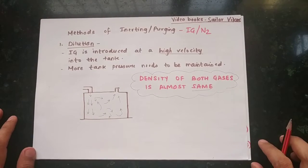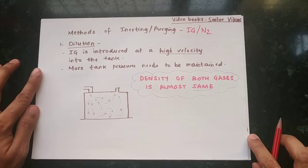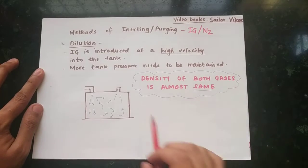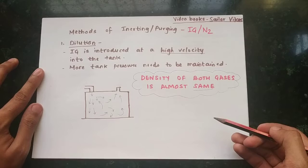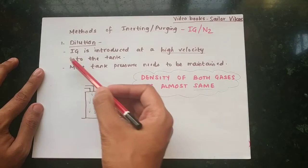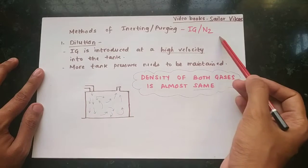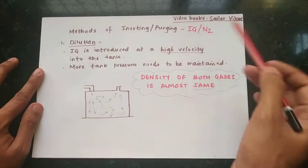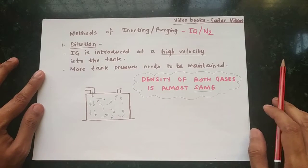Hello guys, if you have watched my previous videos regarding inerting and purging, you have already came across this content. But I just wanted to add a few things — the inert gas (IG) mentioned can be IG or nitrogen, it can be anything between these two gases.